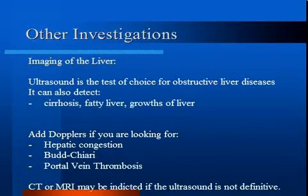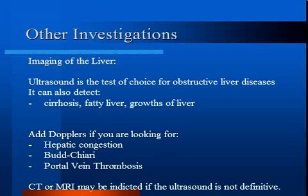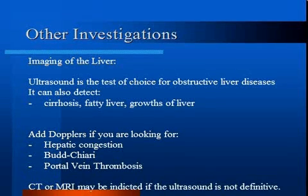An ultrasound is a cost-efficient method to assess the liver and can assess for cirrhosis. Numerous conditions can be detected, including biliary duct abnormalities and cholelithiasis, fatty liver, growth of the liver, and if Doppler flows are used, it can also detect hepatic congestion such as due to CHF, Budd-Chiari, or even portal vein thrombosis.